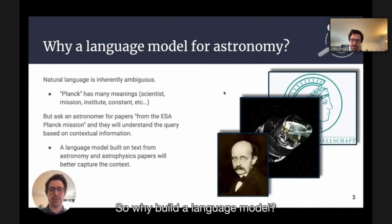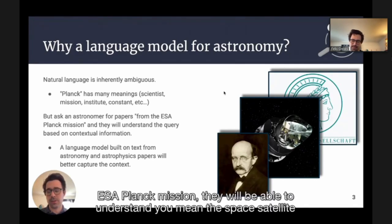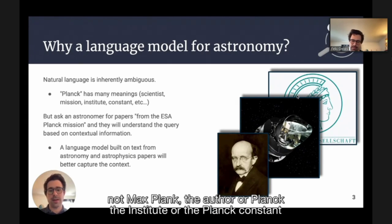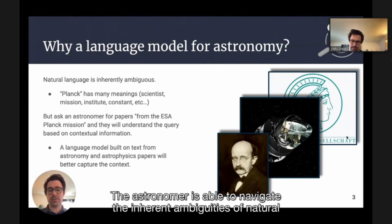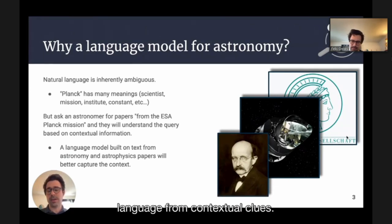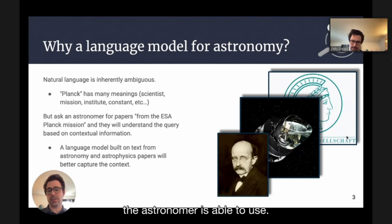So why build a language model? The example I like to give is: if you ask an astronomer for papers from the ESA Planck mission, they will be able to understand you mean the space satellite, not Max Planck the author, or the Planck Institute, or the Planck constant, or any of the other meanings of Planck. The astronomer is able to navigate the inherent ambiguities of natural language from contextual clues — the context of the query, the context of the data.